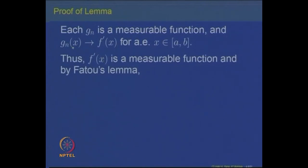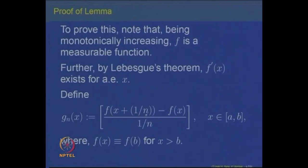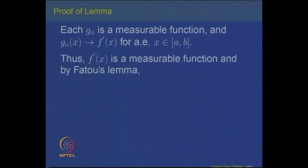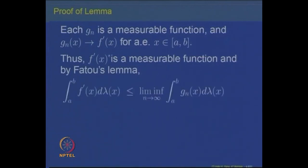By Fatou's Lemma, since g_n is a sequence of non-negative measurable functions converging almost everywhere to f'(x), first f' is a measurable function as the limit of measurable functions, and by Fatou's Lemma the integral of f' over [a,b] is less than or equal to the limit inferior of ∫g_n over [a,b]. This is the direct consequence of Fatou's Lemma applied to the sequence g_n.